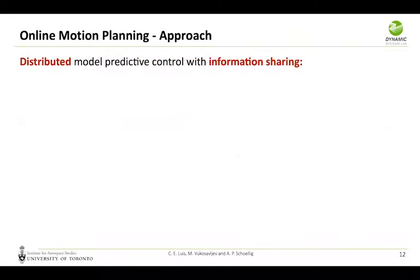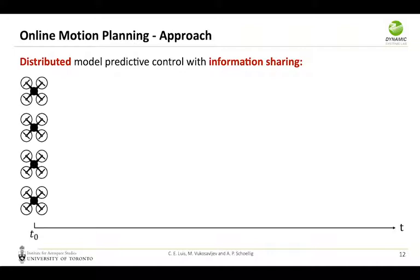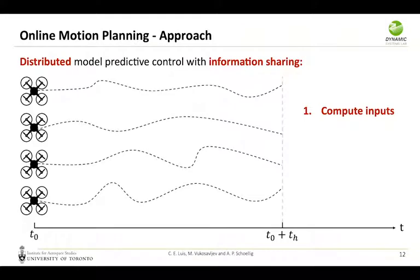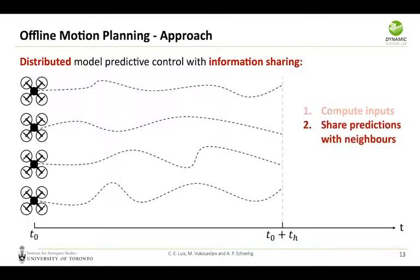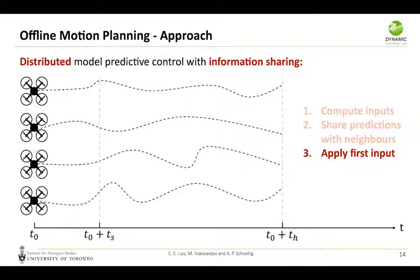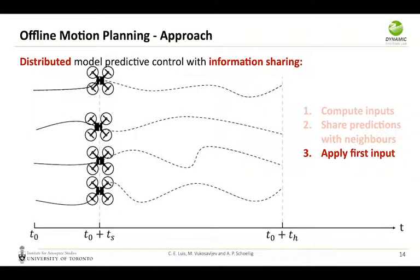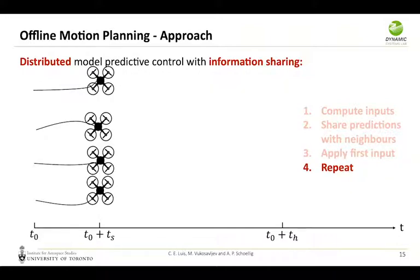In our distributed model predictive control, we allow information sharing. Here we have a few agents, and on the horizontal axis we have the time. First we compute the series of inputs for the agents for a time horizon of length t_h. Then we allow the agents to share their predicted states with neighbors. Then the agents will apply a series of inputs until time t_s, and at this point we measure again the states and repeat the whole process.